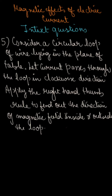First of all, you need to know what is the right-hand thumb rule. With the right-hand thumb rule, the thumb gives you the direction of the current, and the rest of the four fingers give you the direction of the magnetic field. So this is the right-hand thumb rule.